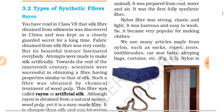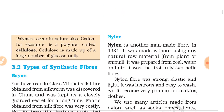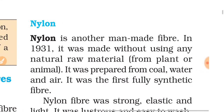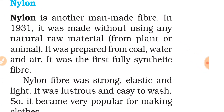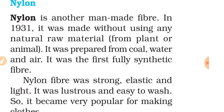The first type, Rayon, we already read about. Today, we are going to read about Nylon. Nylon is another man-made fiber. In 1931, it was made without using any natural raw material from plant or animal. It was prepared from coal, water and air. It is synthetic because it is not made from any plant or animal material.